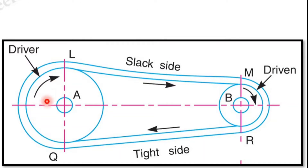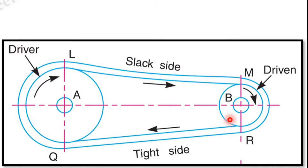Let D1 be the diameter of the driving or driver pulley, D2 be the diameter of the driven or follower pulley, N1 be the speed of the driver in RPM, and N2 be the speed of the follower in RPM. Also, S1 is the slip between the driver and the belt, and S2 is the slip between the belt and the driven pulley.